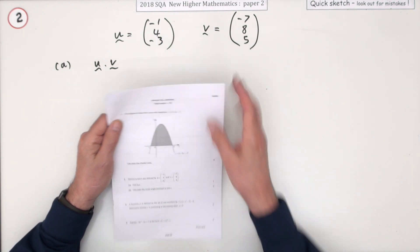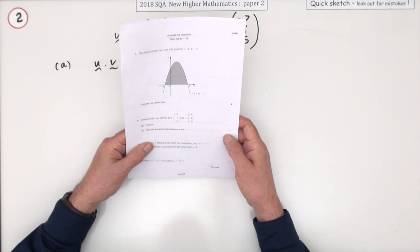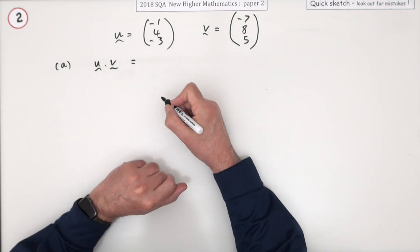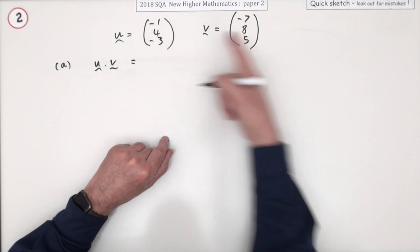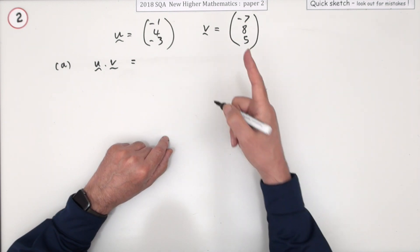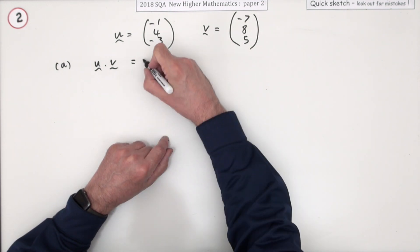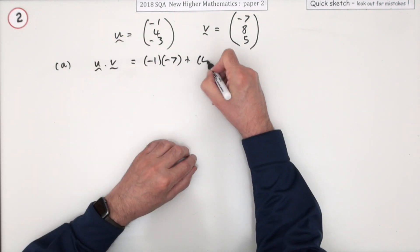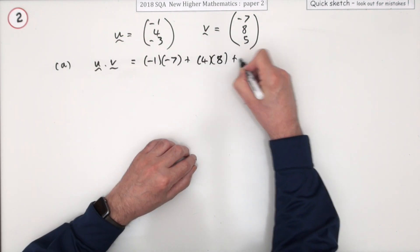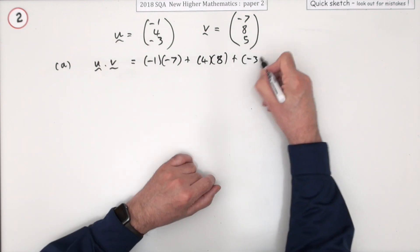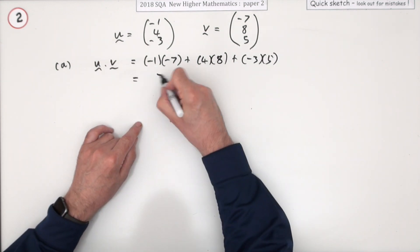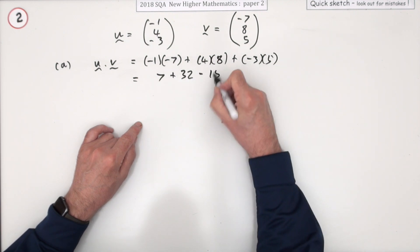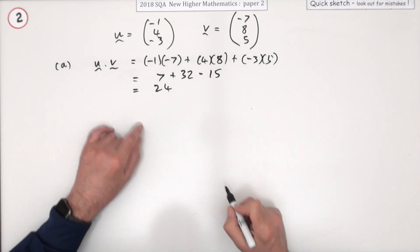Part (a): What's this? Well, that's the scalar product - multiply the corresponding components and add them to a single number, a scalar. So it's negative one times negative seven, four times eight (I'll put them in brackets as well so they don't feel left out), negative three times five. So that's going to be seven plus 32 but minus the 15 - that's eight away from that, so that's 24.